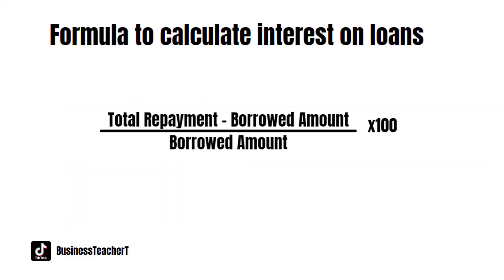So you may be asked to calculate the interest on loans, so it's very important that you know this formula: total repayment minus borrowed amount, divided by borrowed amount, multiplied by 100. The total repayment is the amount in full that the business would have to pay back for the loan, and the borrowed amount is the specific amount that the bank has lent. You must remember to multiply by 100 because we are calculating a percentage.